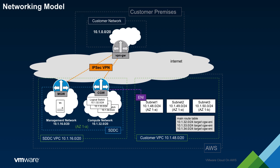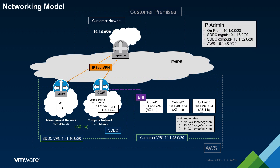Given the interconnectivity between the various network environments, it is important to discuss the subject of IP address management. In order to ensure that all environments can communicate, it is vital that IP addressing be properly planned. IP ranges should be unique and not overlapping between the on-prem environment and the AWS environment, as well as between all SDDCs. It is specifically worth noting that the management network of the SDDC is defined at the time it is provisioned and that this network is fixed for the life of the SDDC. If this network needs to be changed, then the SDDC must be destroyed and redeployed. As such, it is important to properly plan IP addressing in order to avoid needlessly destroying SDDCs.